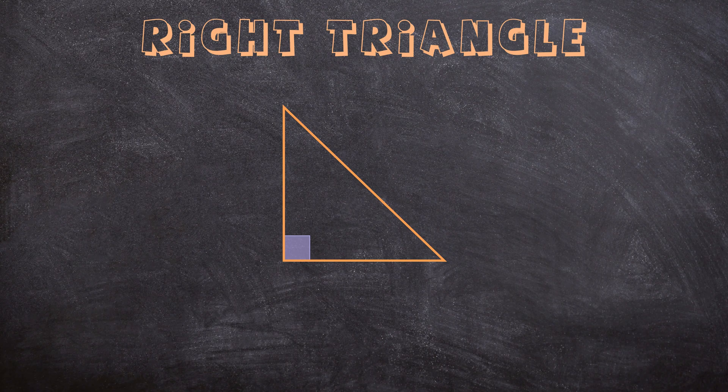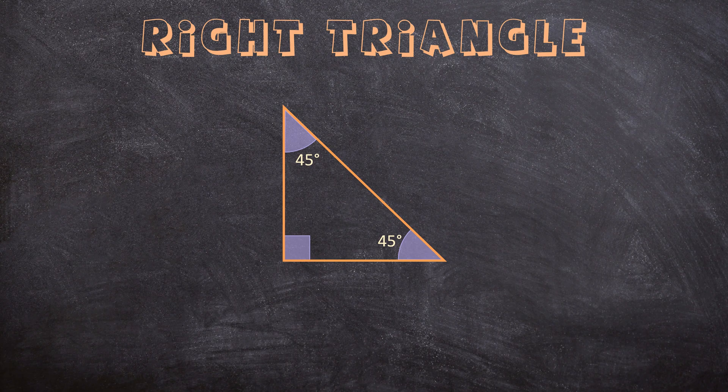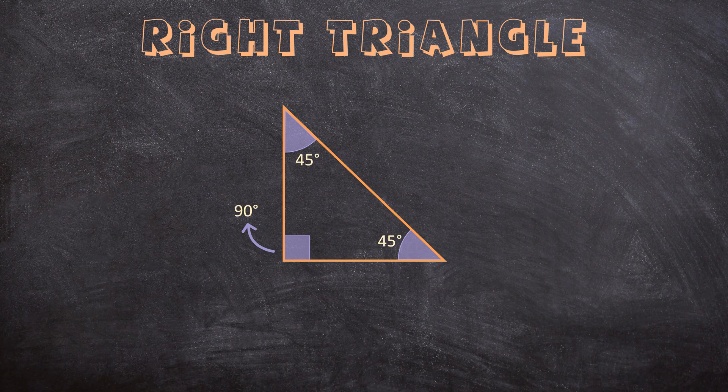It doesn't matter what size the other angles are. If a triangle has one 90-degree angle, it is a right triangle, and we indicate a 90-degree angle with this square. That always means that angle is exactly 90 degrees. So this is a right triangle.